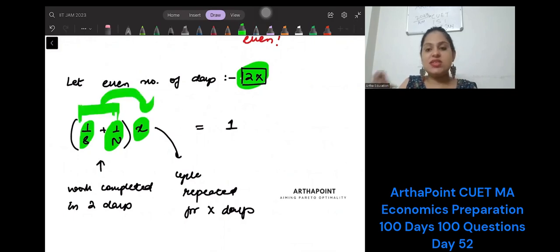much. Into X is the number of work they do. So the total work that they—the total days that they take is 1. I mean, the work completed will be (1/8 + 1/N) in 2 days, and then they will repeat it for X. So it is going to be into X. Is this clear? This is going to be equal to 1.